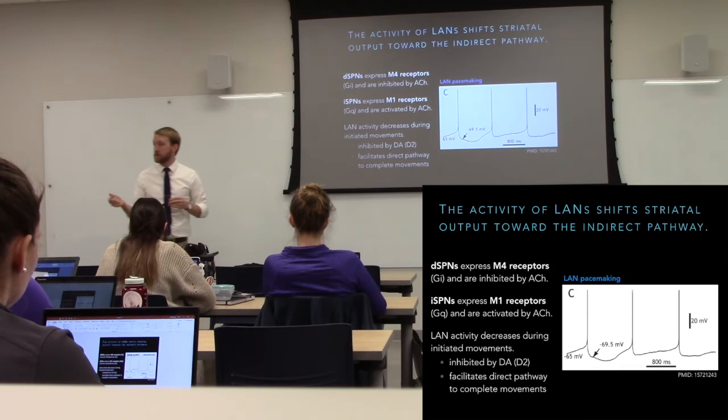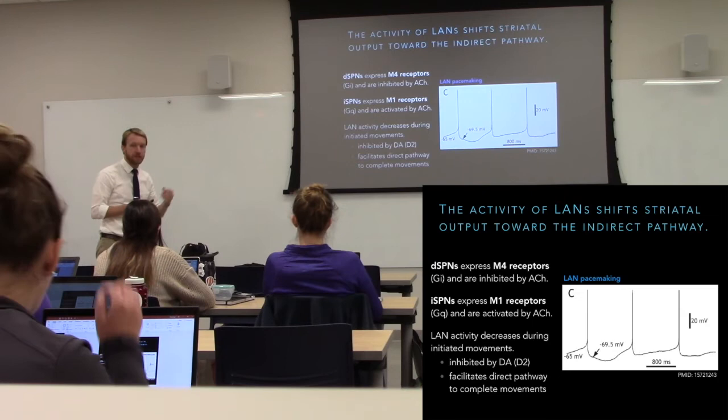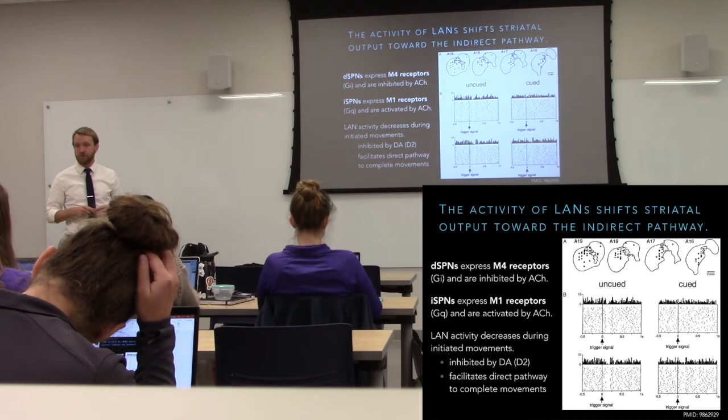If we want to execute a movement, rather than turning on dopamine neurons we turn off our large aspiny neurons. So we see a decrease in cholinergic output whenever we have an initiation of action, and this tends to occur with uncued actions.